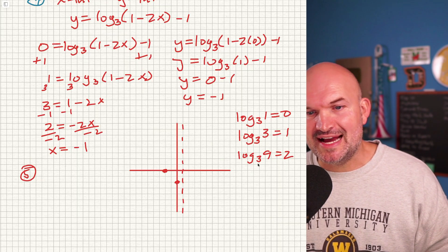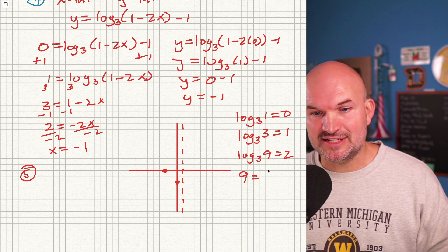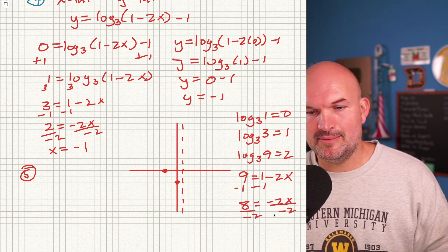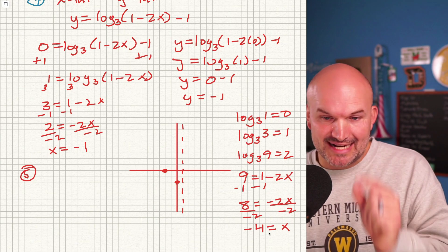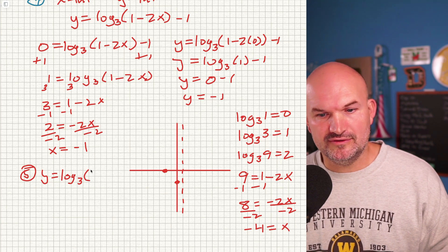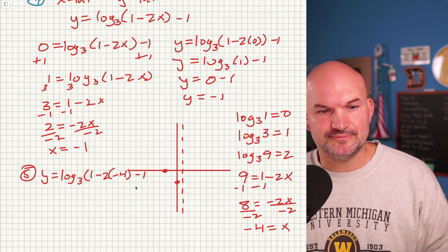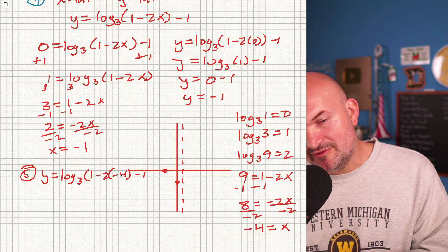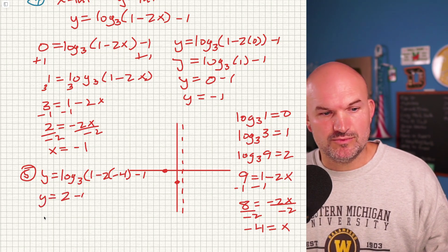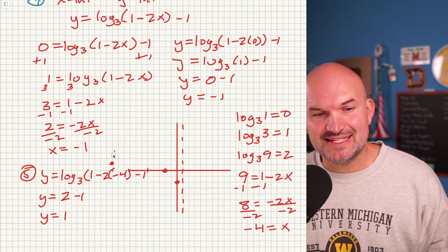Set 1 − 2x = 9 to find that third point. Solving: −2x = 8, so x = −4. Plugging in to verify: 1 − 2(−4) = 1 + 8 = 9, and log base 3 of 9 = 2. So y = 2 − 1 = 1. The third point is (−4, 1). Now you can graph the logarithm accurately using all three points and the vertical asymptote.